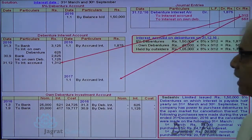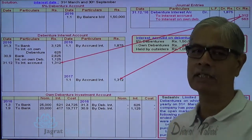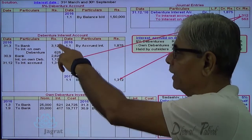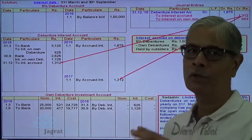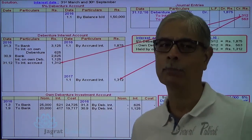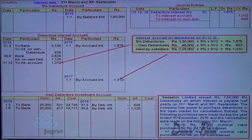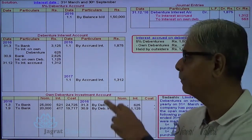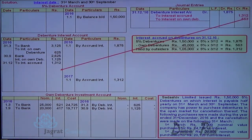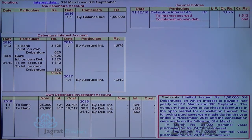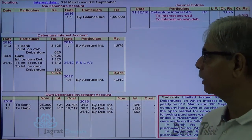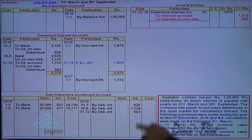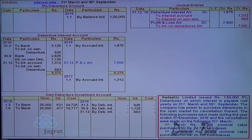At the beginning of the next year, the reversal entry is recorded: interest accrued account debit to debenture interest account credit. This accrued interest adjustment is recorded so that when 6 months interest is paid, it gets settled. The debenture interest account is then transferred to profit and loss account — the net debenture interest for the year is 7,500. Profit and loss account debit to debenture interest account credit. The year-end closing balance of debentures remains 1,50,000 as no cancellations have yet occurred.